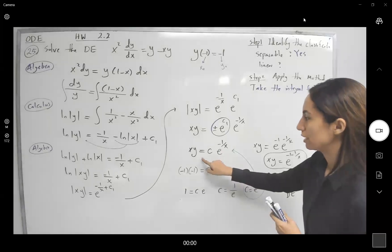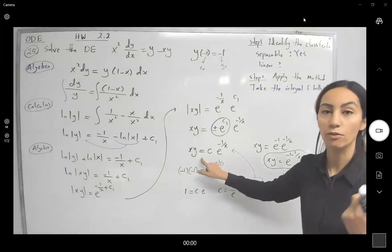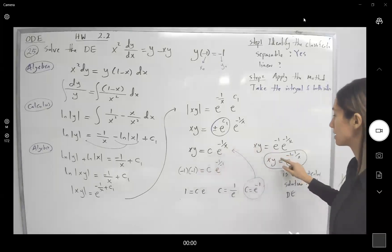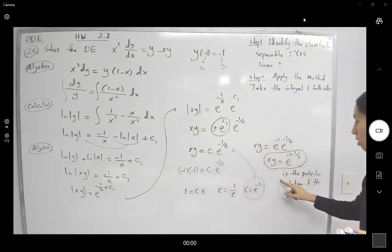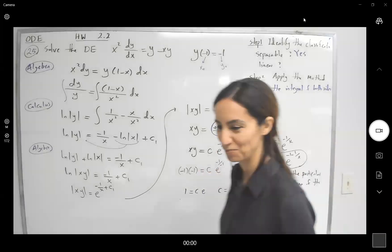So this is your family of solutions, and this one, since it doesn't have any constant or parameter, is called the particular solution.